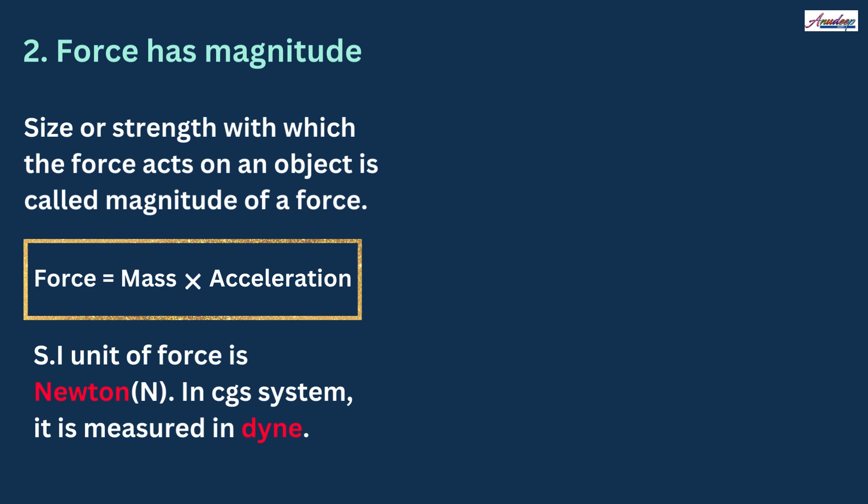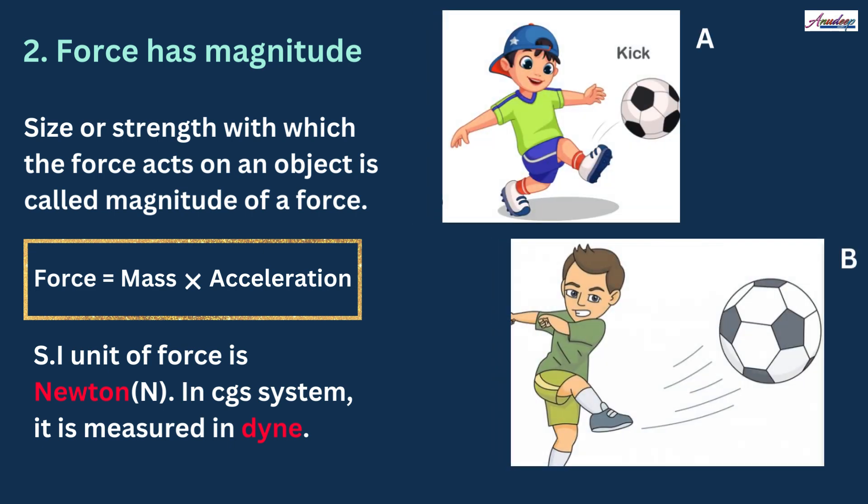By measuring the effect created by force, we can measure the force. For example, if we see figure A and B, in both figures the player is kicking the football. But in figure B, the player is kicking the football with more strength compared to figure A. Hence, the effect created by a player in figure B is more compared to figure A. And this force can be calculated by the product of mass and acceleration. The SI unit of force is Newton and it is represented by capital N. And in CGS system, it is measured in dyne.